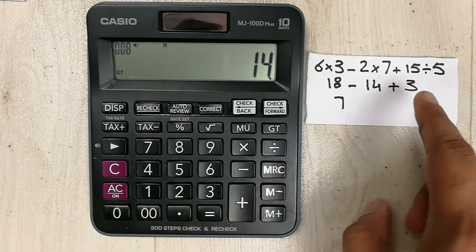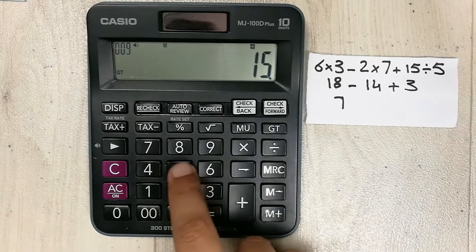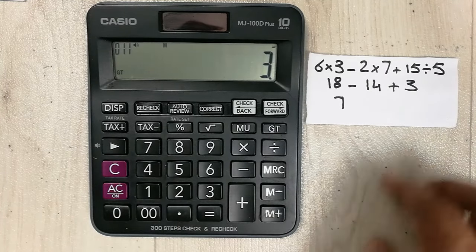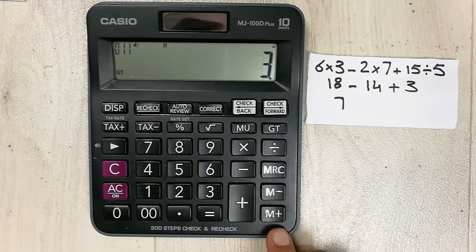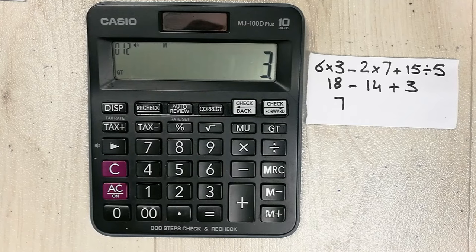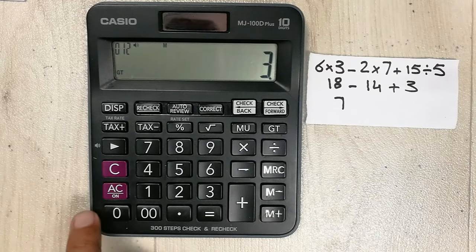Now let's move to the next calculation which is 15 divided by 5 equal. And here again we have positive value, plus sign, so here we use M plus. So now our calculation is completed.